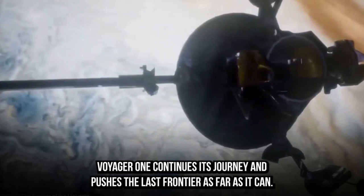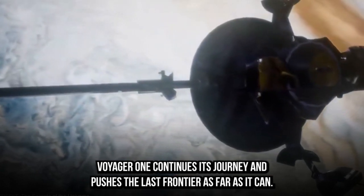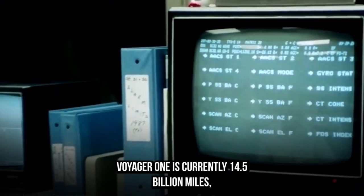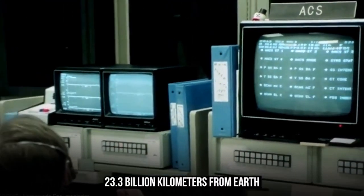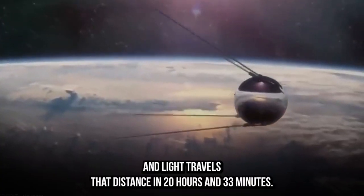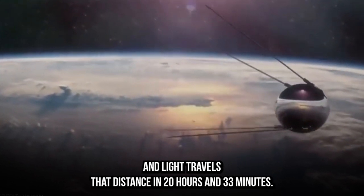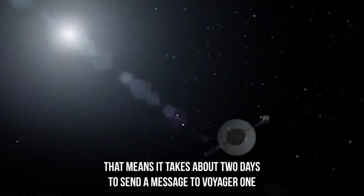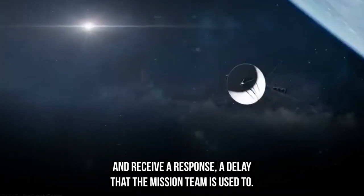Voyager 1 continues its journey and pushes the last frontier as far as it can. Voyager 1 is currently 14.5 billion miles, 23.3 billion kilometers from Earth, and light travels that distance in 20 hours and 33 minutes. That means it takes about two days to send a message to Voyager 1 and receive a response, a delay that the mission team is used to.